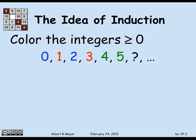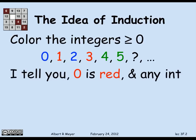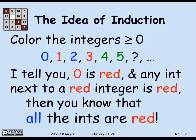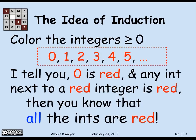Here are the properties my coloring has. First of all, I colored 0 red. And I've continued the coloring satisfying the following rule: if I have an integer that's next to a red integer, then it's red also. So any integer next to a red integer is red also. What's my coloring? Well, you obviously realize that they're all red — they have to be.